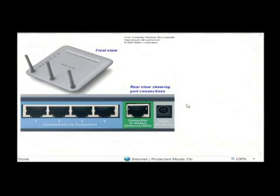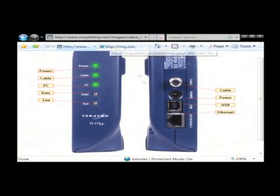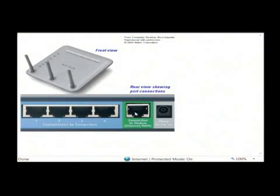So to recap: cable internet comes into your house from the coax cable, goes into the cable modem which converts it into an internet signal back and forth to the cable provider, and then either plugs directly into your computer by USB or into a router, which splits it up into multiple computer connections. That is how cable internet works. My name is Dave Andrews and I've just talked to you a little bit about how cable internet works. Thank you.